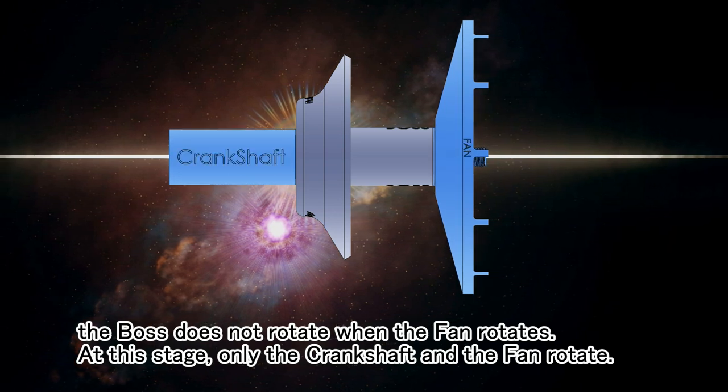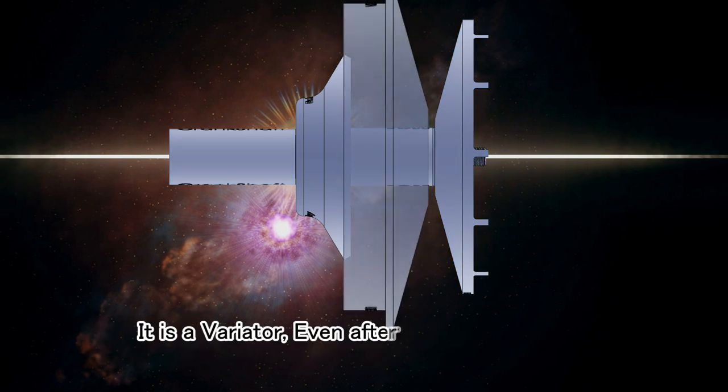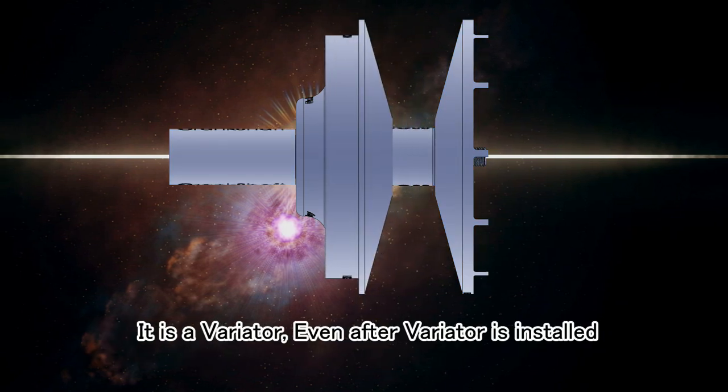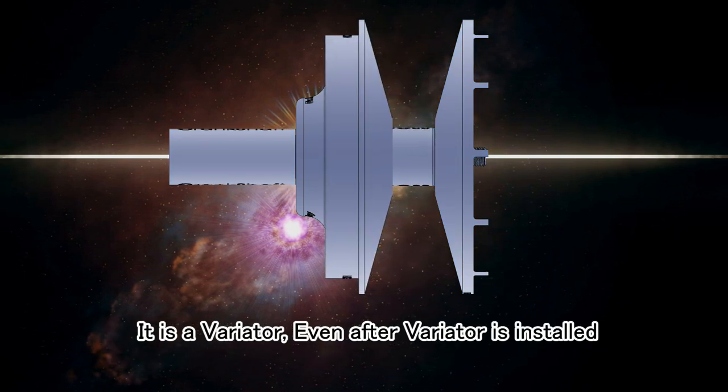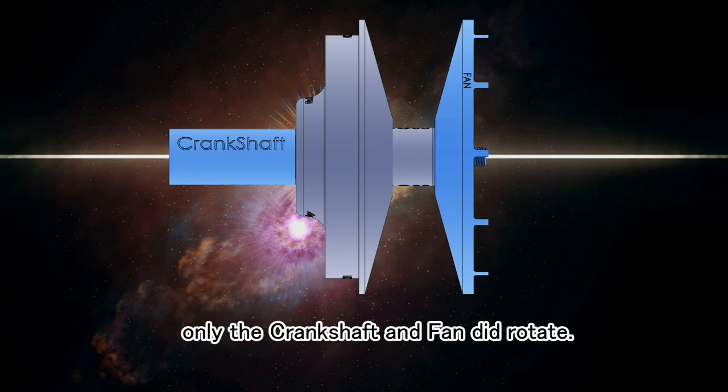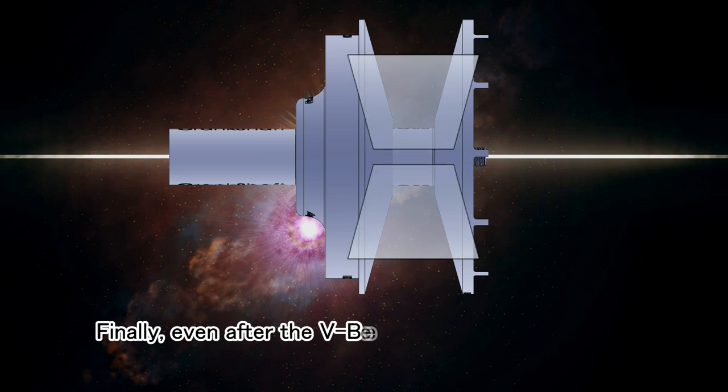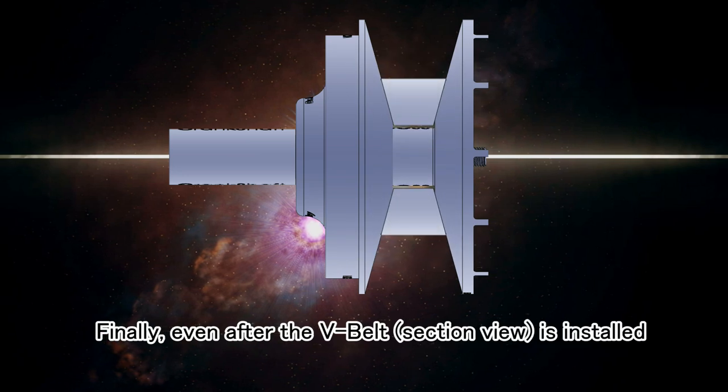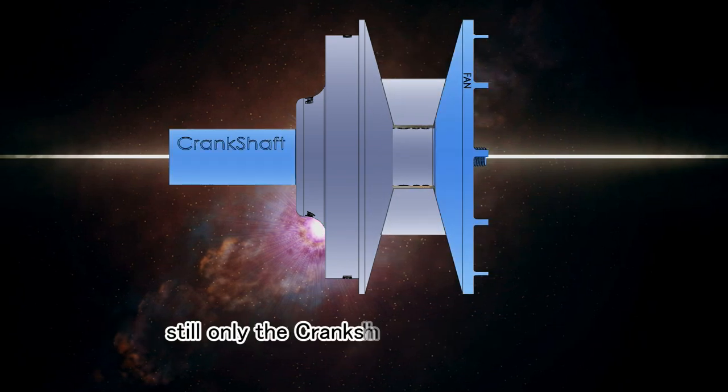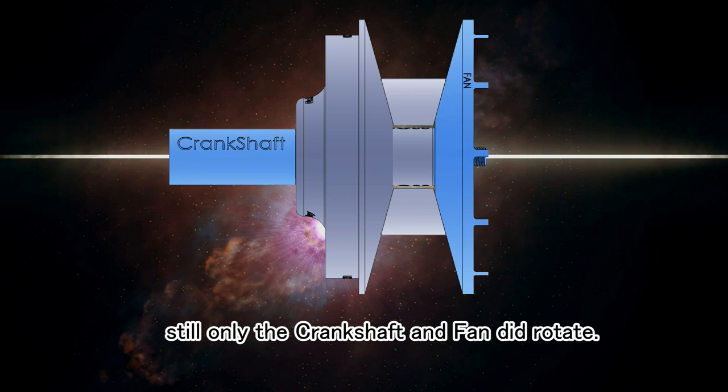At this stage, only the crankshaft and the fan rotate. It is a variator. Even after variator is installed, only the crankshaft and fan rotate. Finally, even after the V-belt is installed, still only the crankshaft and fan rotate.